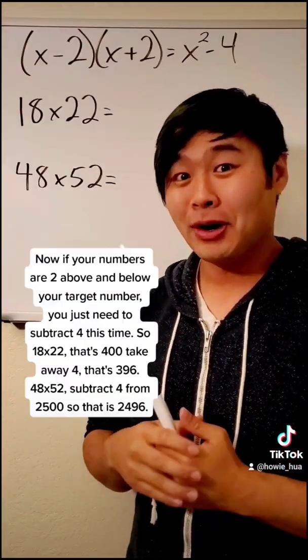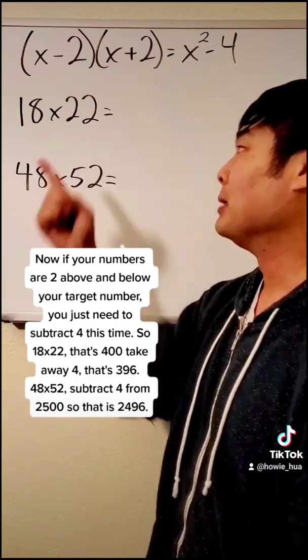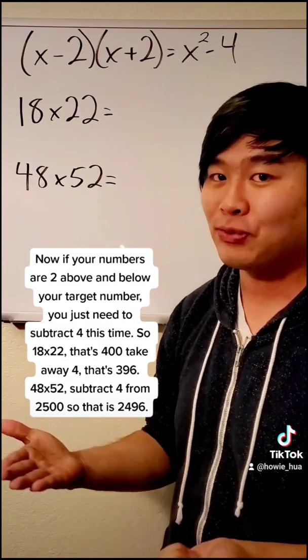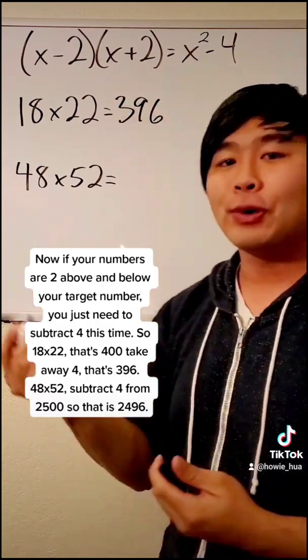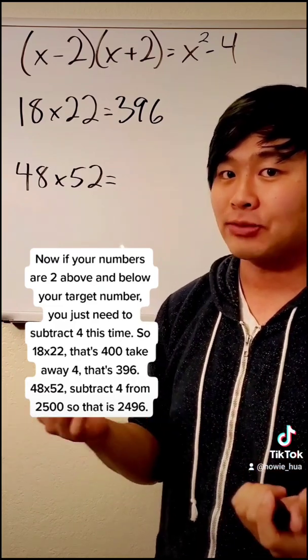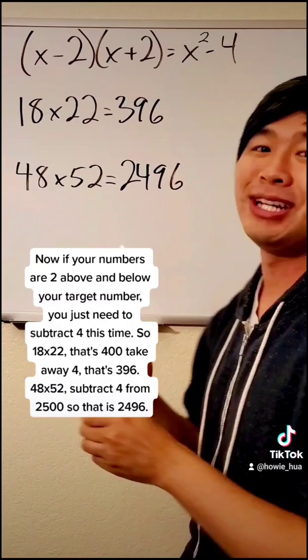Now if your numbers are 2 above and below your target number, you just need to subtract 4 this time. So 18 times 22, that's 400, take away 4. That's 396. 48 times 52, subtract 4 from 2,500. So that is 2,496.